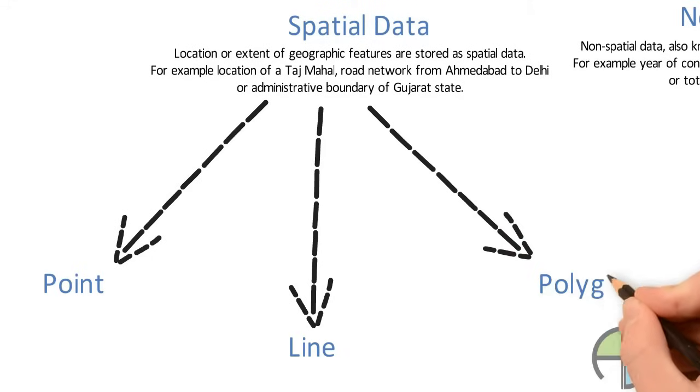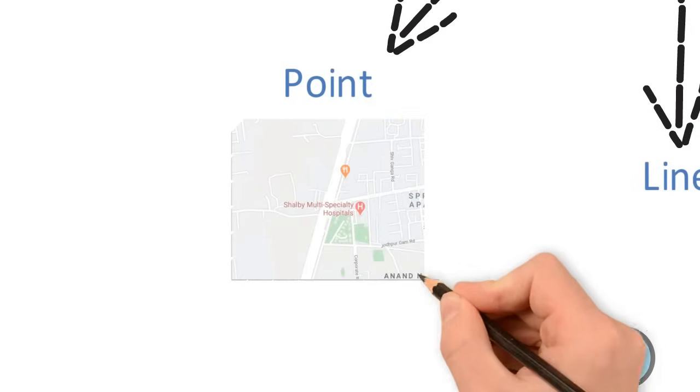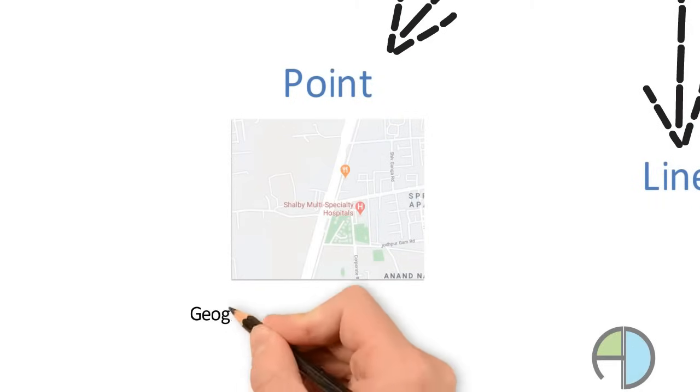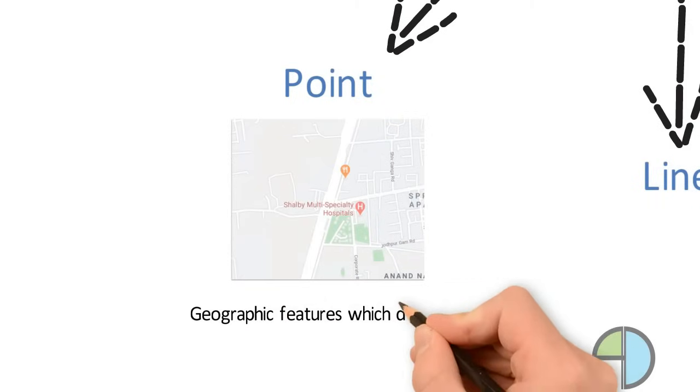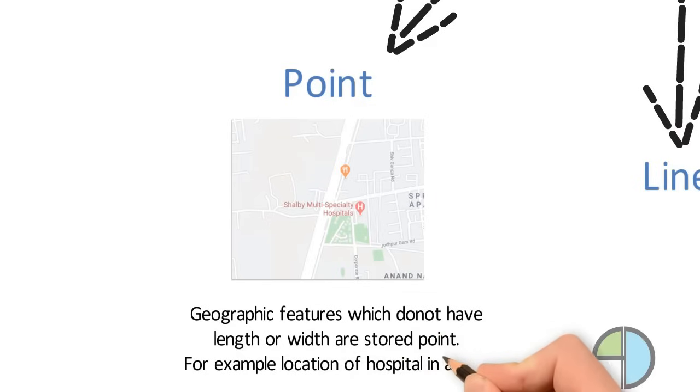Let us understand point. Any object which does not have width or length can be represented by a point. For example, location of a hospital in a city can be represented by a point.